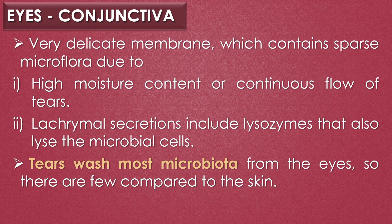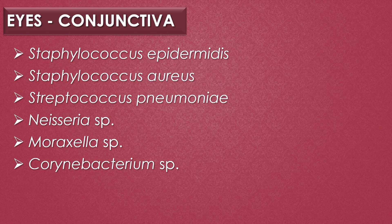The membrane that constitutes the lining of the eyelids and the eyeball is termed the conjunctiva. It is a very delicate membrane which contains sparse microflora due to the high moisture content and continuous flow of tears. The blinking action eliminates microorganisms, and lacrimal secretions include lysozyme that lyses microbial cells. Tears wash out most microbiota from the eyes. The predominant microorganisms inhabiting the conjunctiva are Staphylococcus epidermidis, Staphylococcus aureus, Streptococcus pneumoniae, Neisseria species, Moraxella species, and Corynebacterium species.